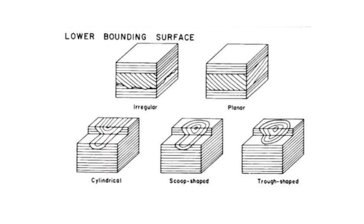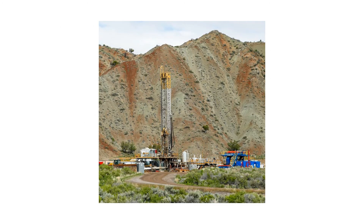Each of these dunes has a unique internal structure and creates unique cross-bedding. If one or any combination of these cross-bedding structures are found, an Aeolian depositional environment can be assumed. Through studying modern Aeolian environments, we can more easily identify Aeolian environments of the past. The identification of Aeolian sandstones is important not only for understanding how a location's environment has changed over geologic time, but also potentially lucrative for its identifier.